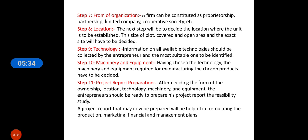Then machinery and equipment — having made a choice of technology, the machinery and equipment requirements for manufacturing the chosen product have to be decided. Machine and equipment requirements will change as your location changes and as your technology changes.